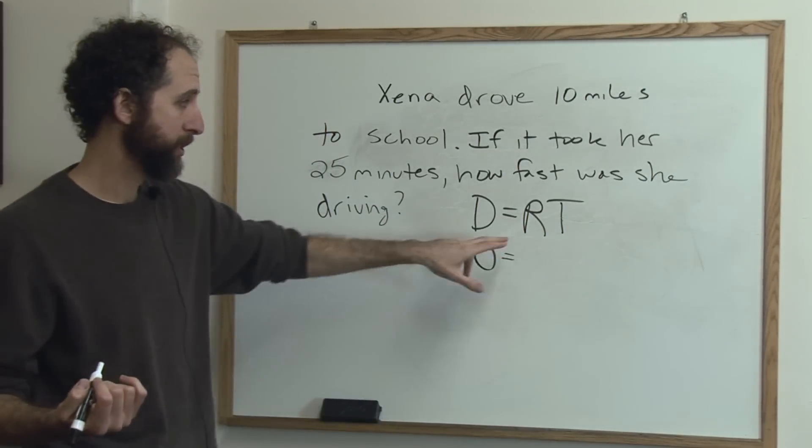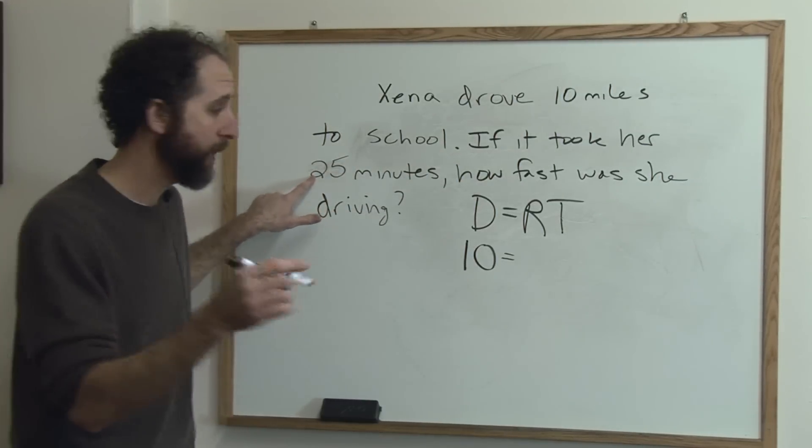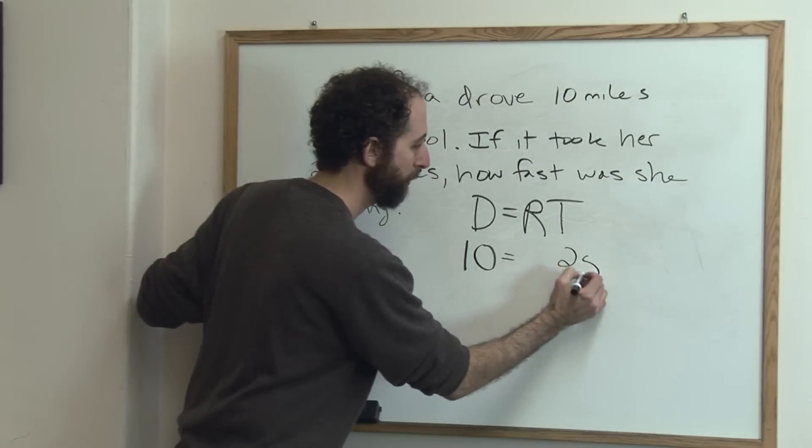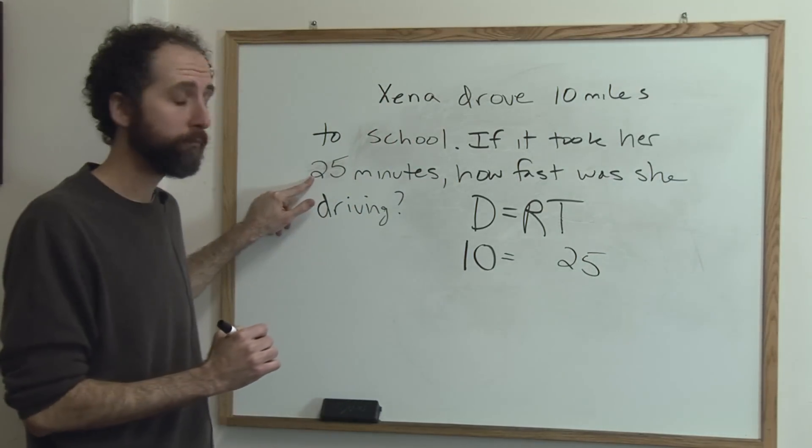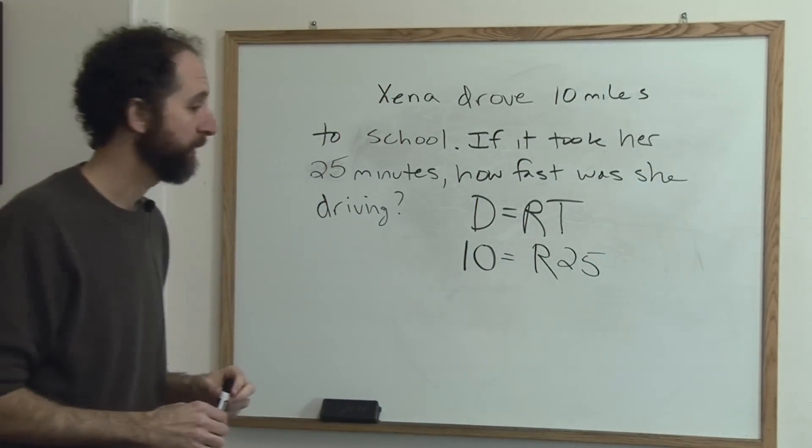If she drove 10 miles, that's not her speed or her time, right? So it took her 25 minutes. That's the time. What we don't know is R. So that's what we're going to solve for.